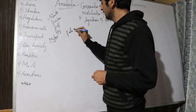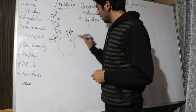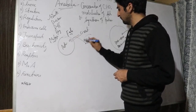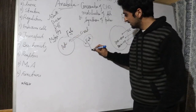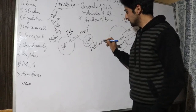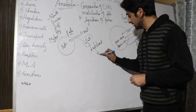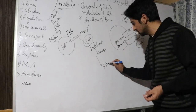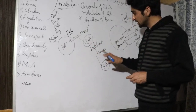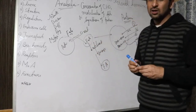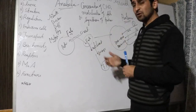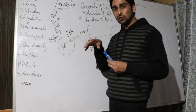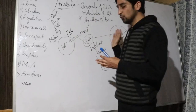Regarding fat metabolism, growth hormone mobilizes fats from adipose tissue into the blood circulation, where they are utilized for energy production. When fats are broken down, the product is fatty acids, so fatty acid concentration in the blood increases. As a result, proteins are spared from catabolism, and carbohydrates are also somewhat conserved.